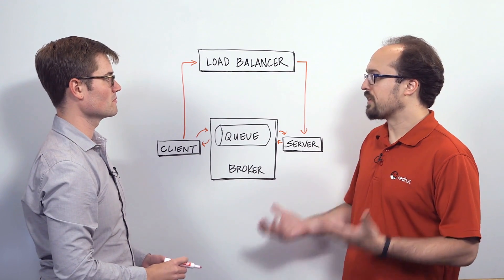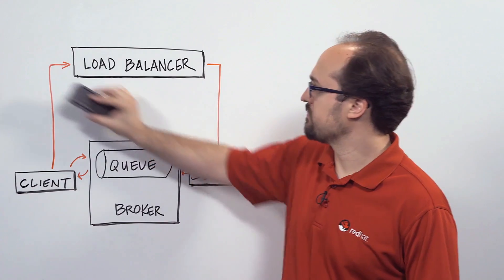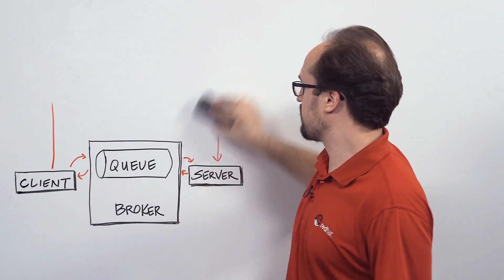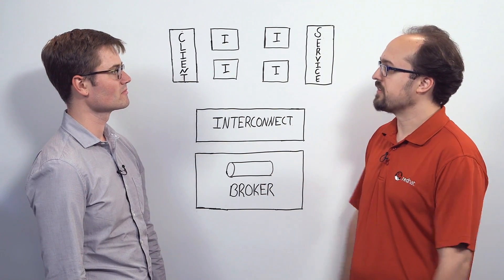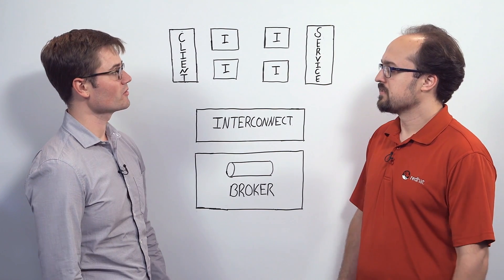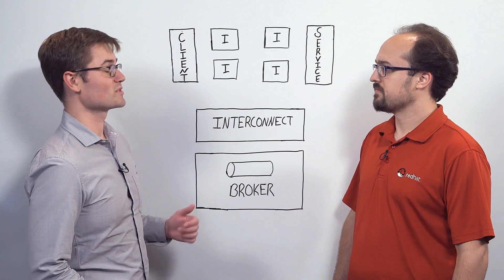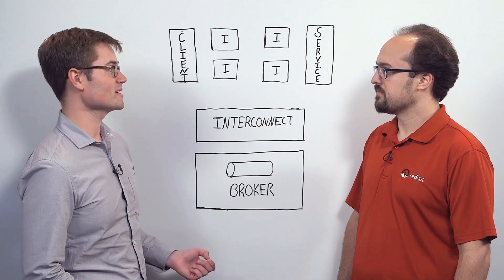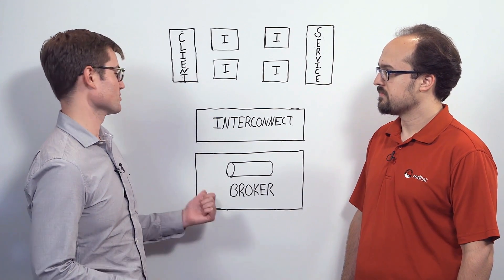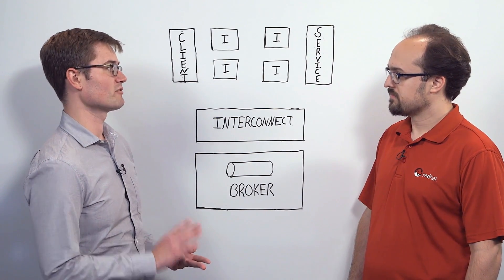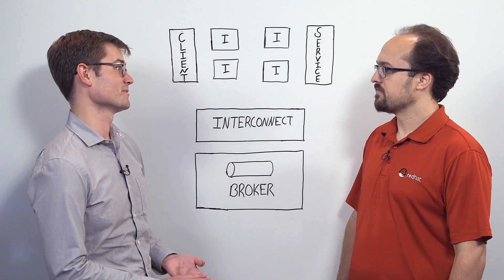Given the current state, let's talk about AMQ7. AMQ7 is based on the upstream Apache AMQ Artemis and Apache Cupid projects. It contains your traditional message broker, a variety of client libraries, and a new interconnect feature.